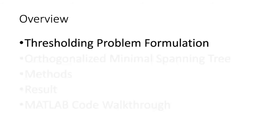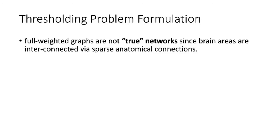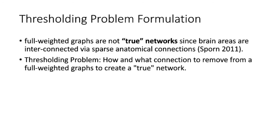A fully weighted graph is not the true network, since brain areas are interconnected via sparse anatomical connections. This was stated by Bullmore in 2011, who is kind of the lead researcher in graph theory for the brain. The consensus is that you have to threshold your graph — you cannot just leave the weights and do your analysis. The thresholding problem is: how and what connections do you remove?